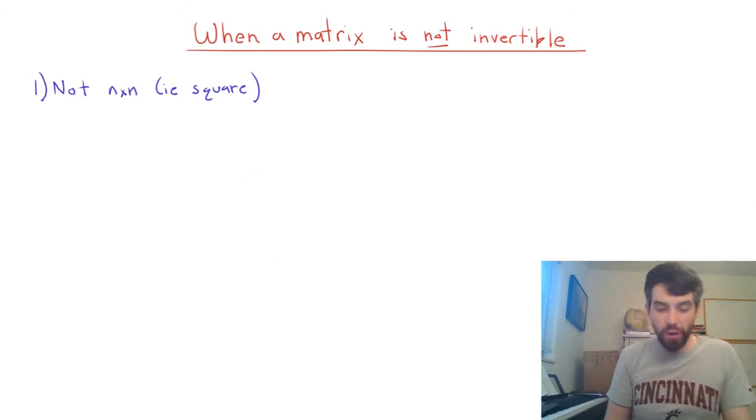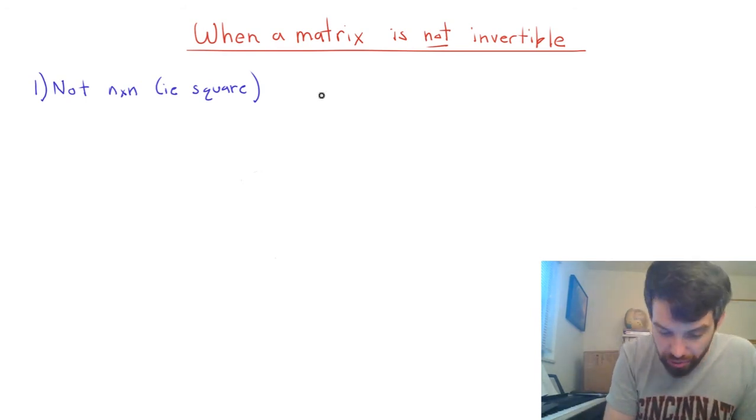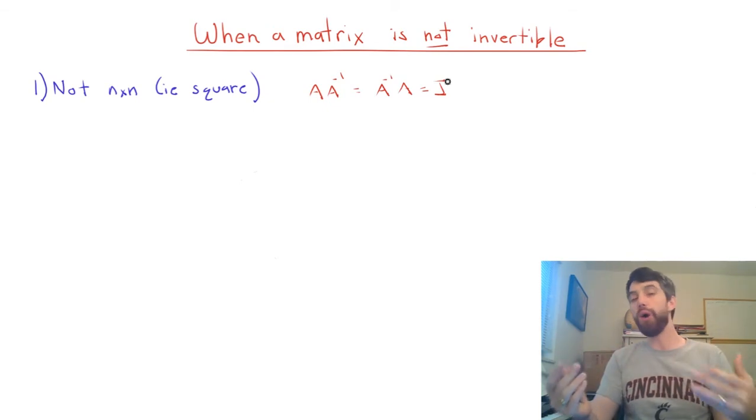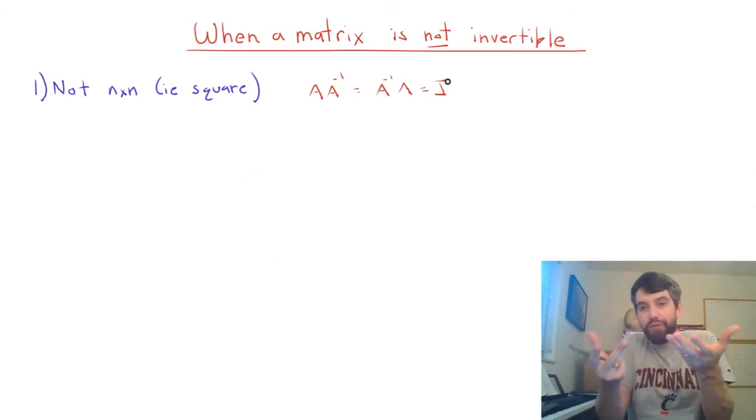And you might recall here that to be an invertible matrix we require the condition that A multiplied by A inverse is the same thing as the other way around, A inverse multiplied by A, but either way the identity. And this imposes the condition that for matrix multiplication to be defined if you've got the product of two matrices, those inner numbers on the dimensions need to match.